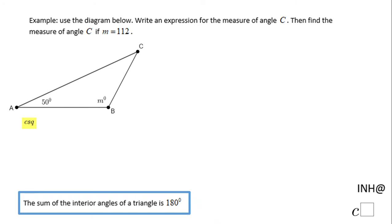Welcome back to iNhelp at C Square. In this example we have a triangle ABC and we need to write an expression for the measure of angle C, and then find angle C if M is 112, where M is the measure of angle B. Notice down here I have a theorem that